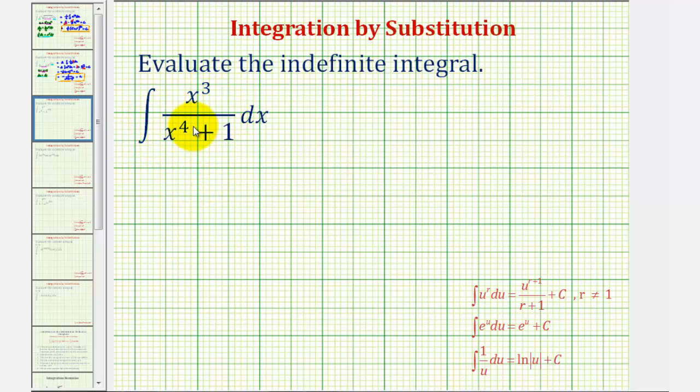So looking at this example, notice how the numerator is degree three and the denominator is degree four. Whenever two parts of the integral differ by one degree, we always want to let u be equal to the higher degree part.